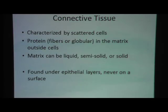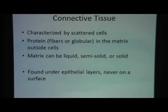Let's review connective tissue. They are categorized by scattered cells. You will sometimes see proteins in the matrix, which is outside the cells. In fact, the matrix can be liquid, semi-solid, or solid. Connective tissues are found under epithelial layers — never on the surface, because if it's on the surface it would be epithelial tissue.